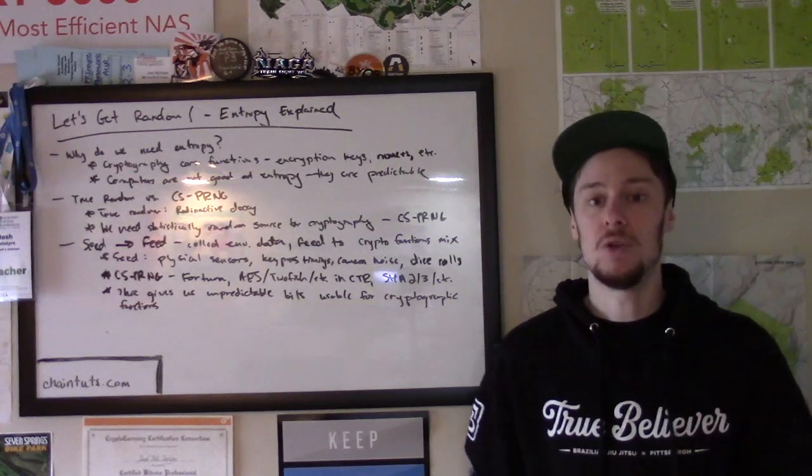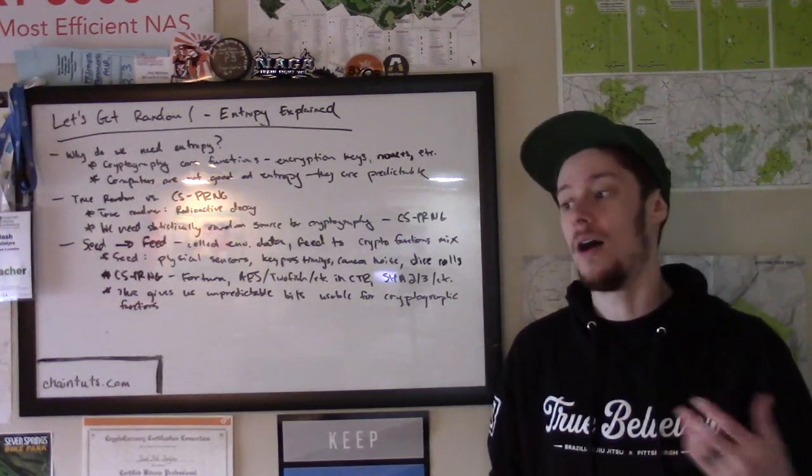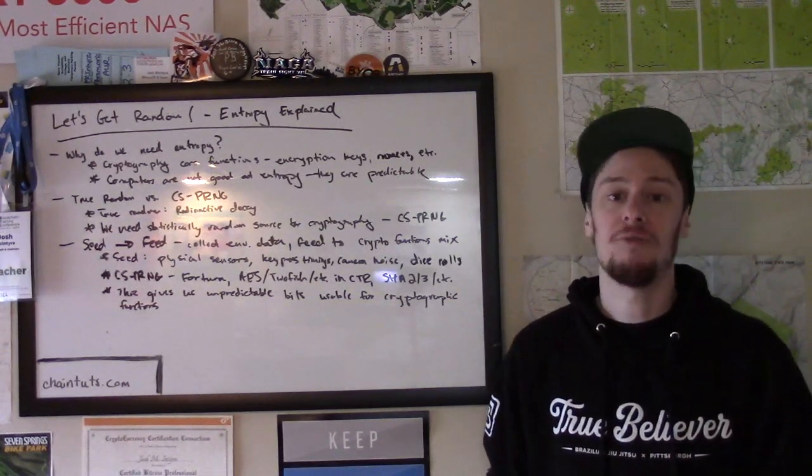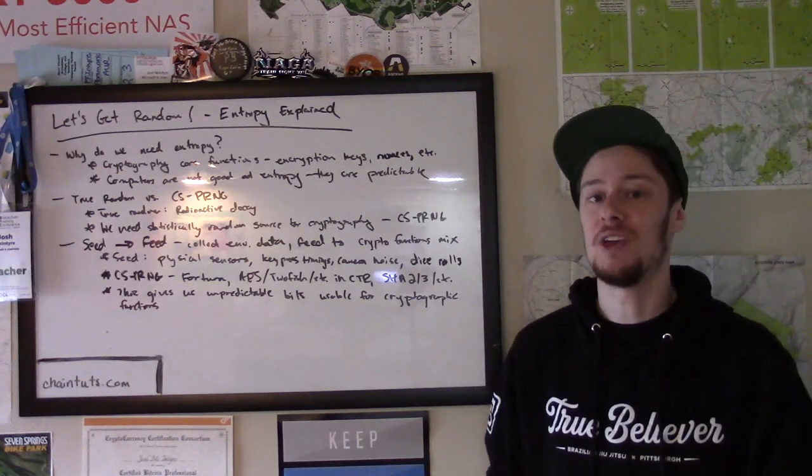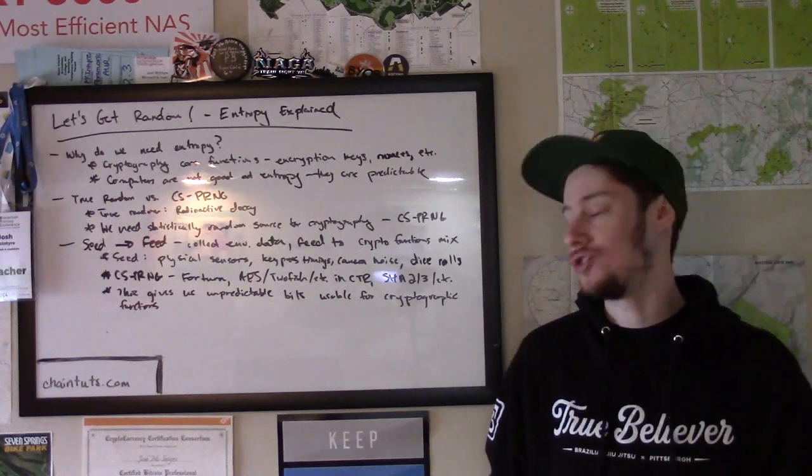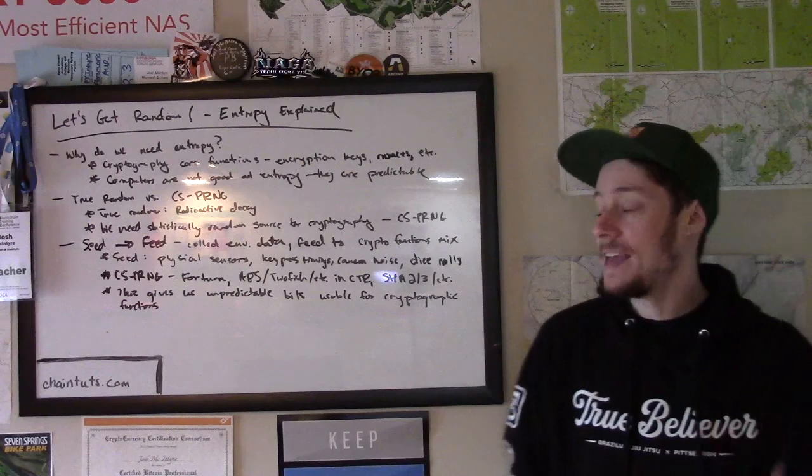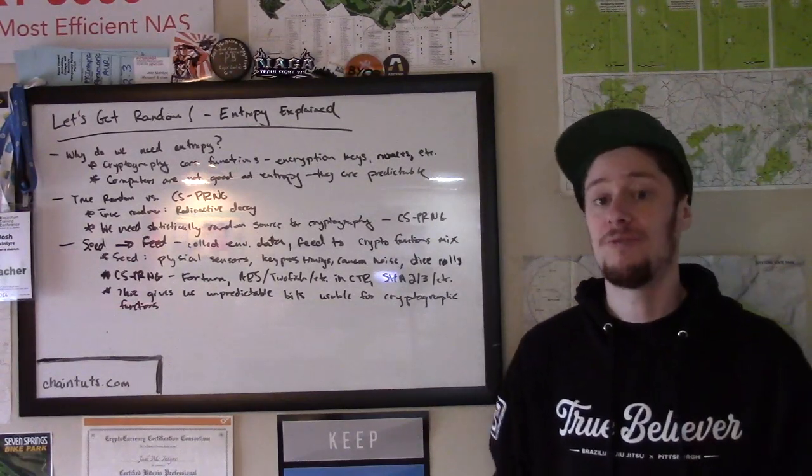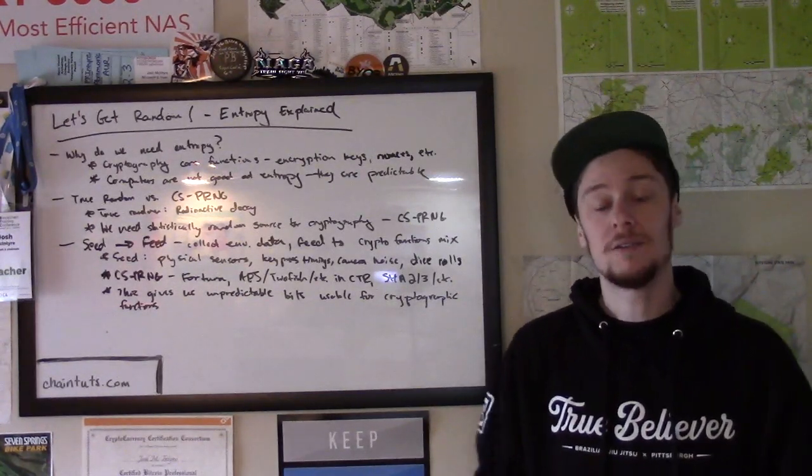A famous example of this is Cloudflare's lava lamp farm that they use to help seed their PRNGs. Even operations that are known to be physically unpredictable like dice rolls can be used.